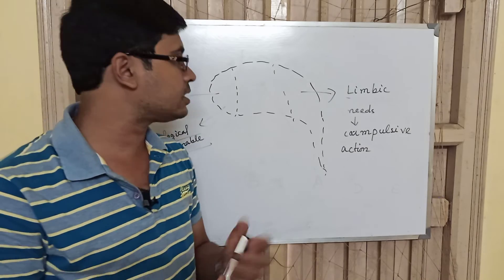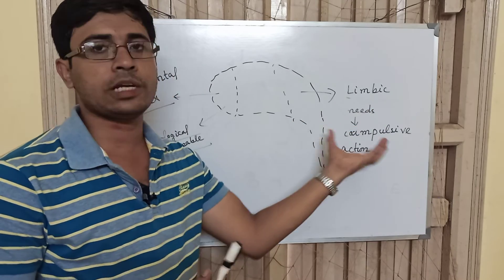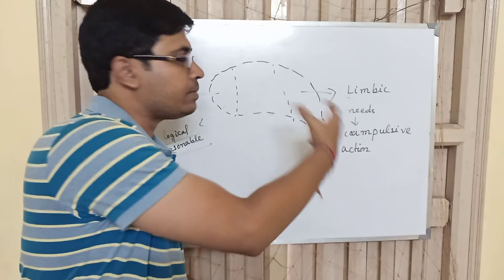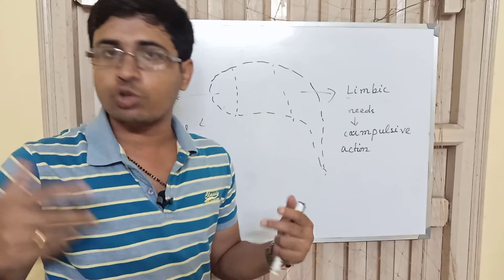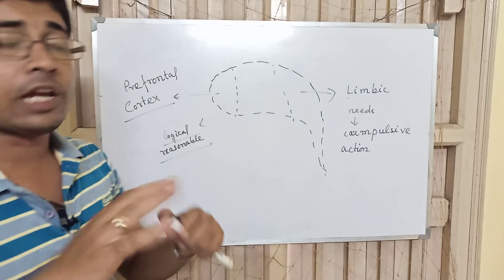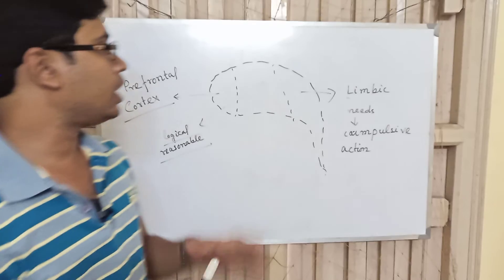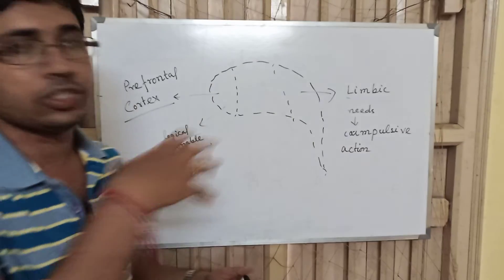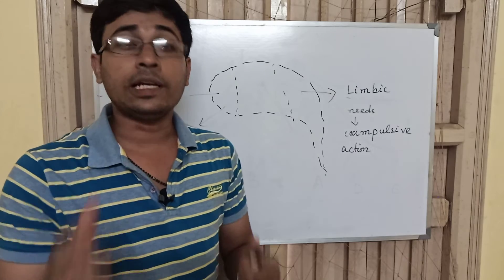And this limbic system is responsible for needs. It is actually keeping human society together. If the limbic system is not there, there will be no society as such. The prefrontal system is taking logical actions. So if you can manage these two things, you will be successful in life. That's the main essence of success.